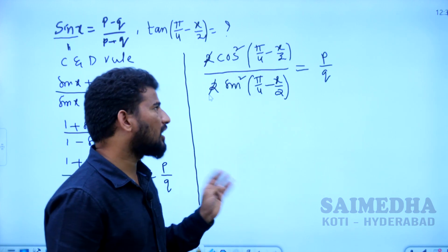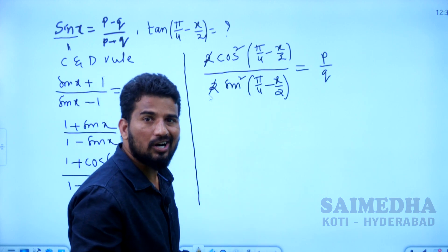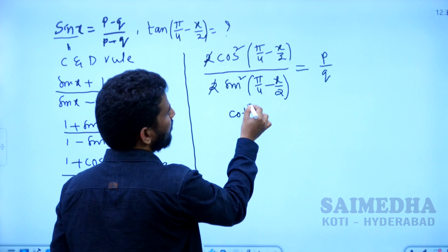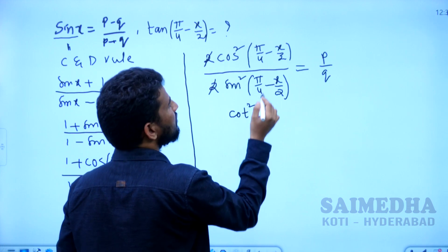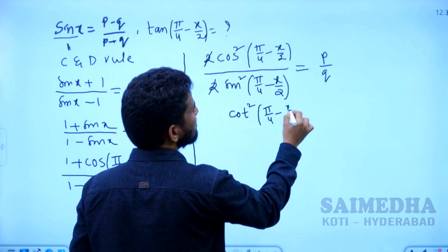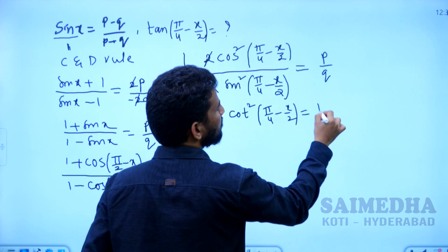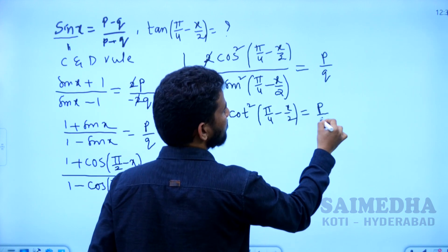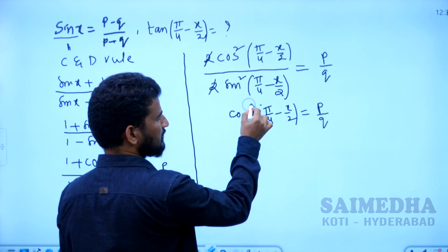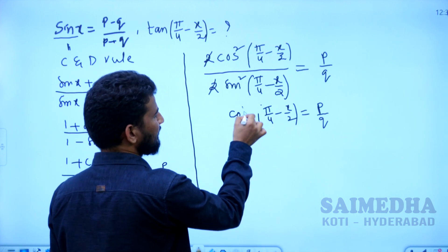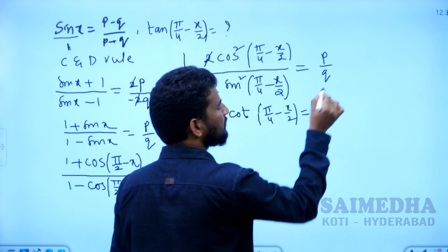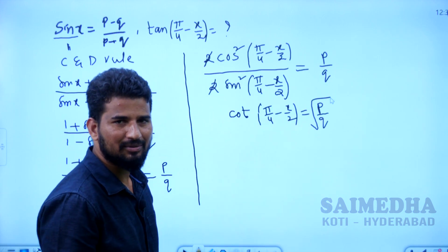After the cancellation of 2, cos over sin gives the cot function. So we get cot²(π/4 minus x/2) is equal to p by q. If we remove the square, then cot(π/4 minus x/2) is equal to root of (p by q).